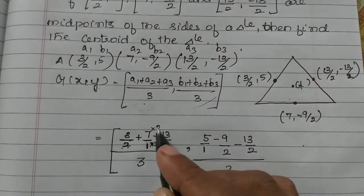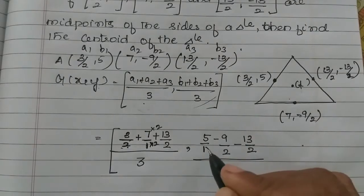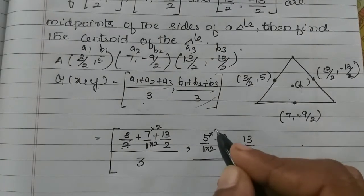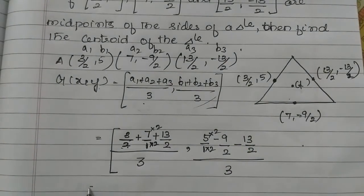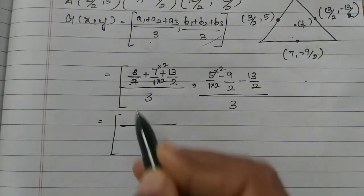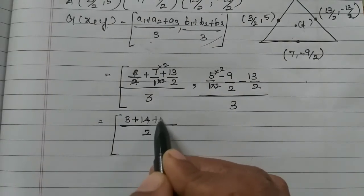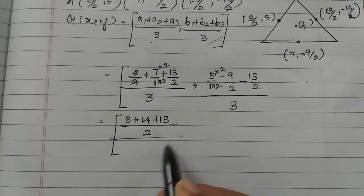So we will change the function now. The numerator and denominator multiply 2. So here we will multiply 2 by numerator and denominator. So now the denominator is 2, 2 is common. So 2 is common: 3 plus 7, 2 is 14 plus 13 divided by 3.